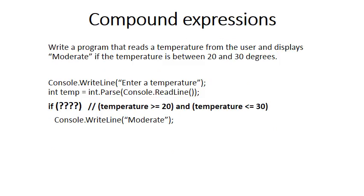So the question is: how do we formulate that condition for the if statement to print 'moderate'? The way to look at it is to see that it's actually two separate conditions. One says the temperature must be greater than or equal to 20, and the other says the temperature must also be less than or equal to 30. In English: the temperature is greater than or equal to 20 as well as less than or equal to 30.